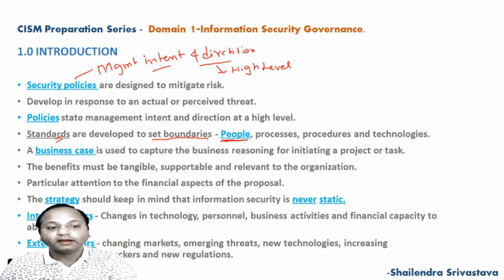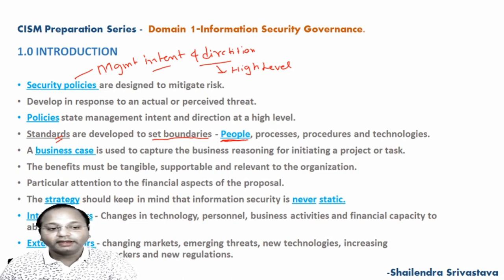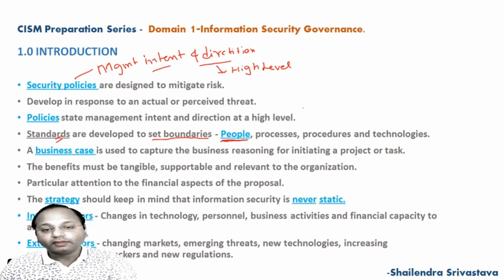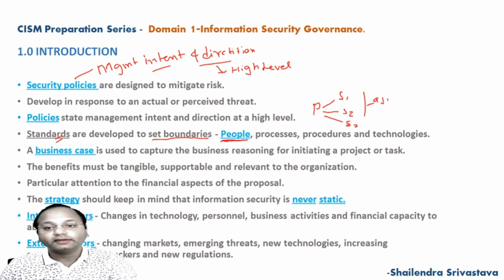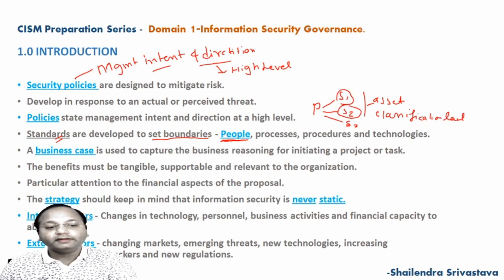Standards are basically developed to set the boundaries. There are usually several standards for each policy, depending on the classification level of the asset related to that standard. So a policy contains multiple standards, and that depends on the asset classification. For example, if an asset is classified as very sensitive, we could have multiple standards.